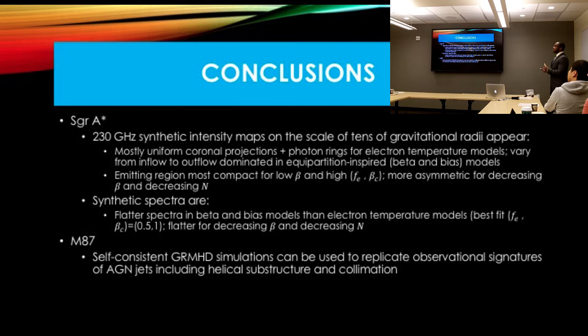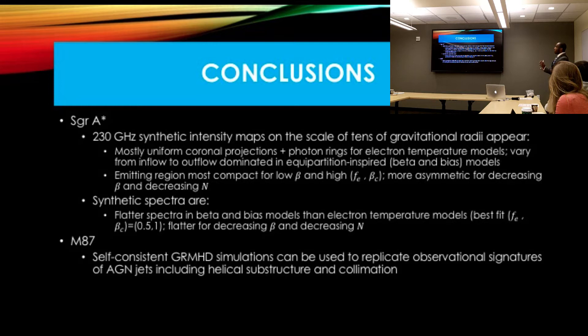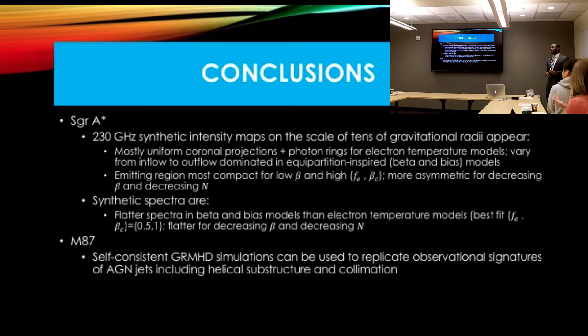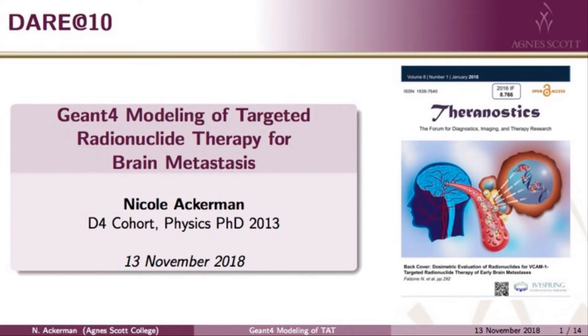In conclusion, our synthetic intensity maps and spectra for Sgr A* are roughly coronal projections for the intensity maps with some photon rings, depending on parameter values, that can also expose inflow versus outflow — especially for the equal-partition-inspired beta and bias models. The emitting regions for low beta and high F and beta_C are the most compact and asymmetric, favoring our observations. The spectra work best with the best model for the emitting region in the electron temperature models; they are flatter for decreasing beta in the beta models and for decreasing N in the bias models. For M87, we can reproduce certain observational discrete signatures like collimation and magnetic field substructure. Thank you.